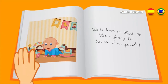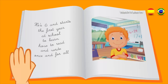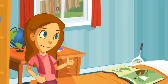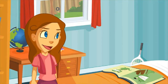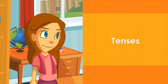It is a comic about my dad's life. It starts when he is born in Hackney, in East London. It reads: 'He is born in Hackney. He's a funny kid, but somehow grouchy. He's six and starts the first year at school to learn how to read and write once and for all.' I like it, Matt, but I think you should check out the tenses you've used to give your comic a sense of past action.